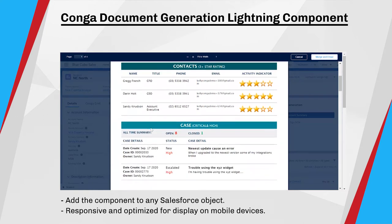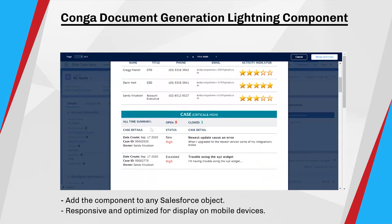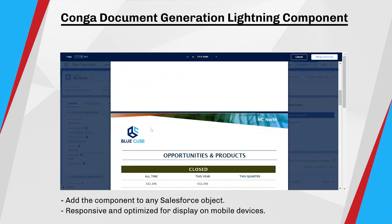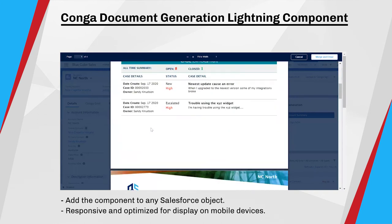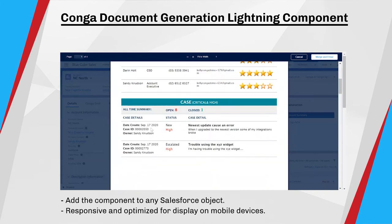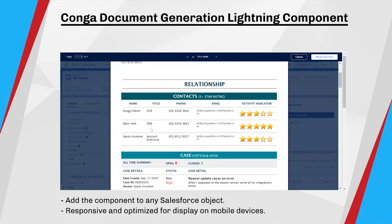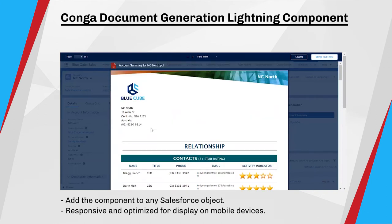Being lightning-ready means that it's responsive, optimized for display on mobile devices and tablets. This has been one of Conquer's overriding priorities for 2020, and it will continue to be so into 2021 and beyond — to cater to users on the go.